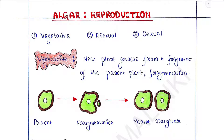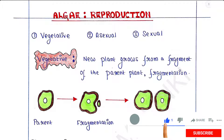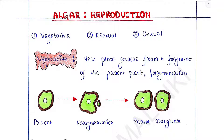Hey guys, this is Malinky, welcome back to my channel. Today we will talk about reproduction in algae. Basically there are three types of reproduction in algae: vegetative, asexual, and sexual.